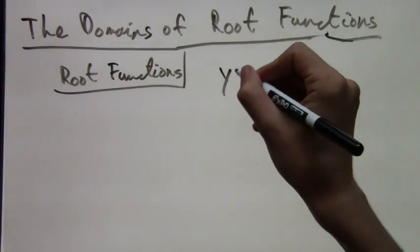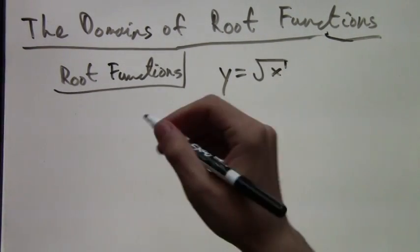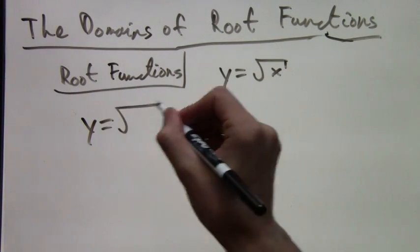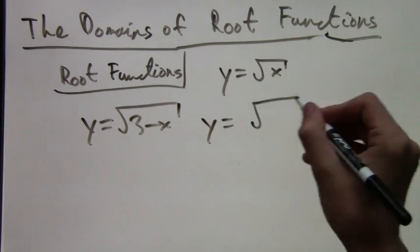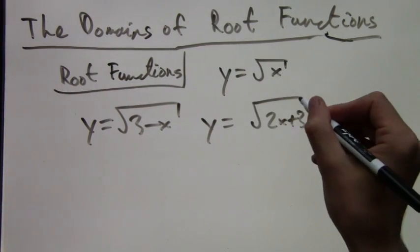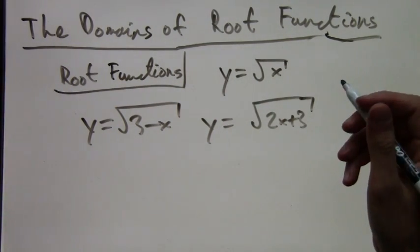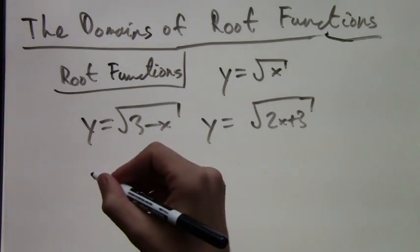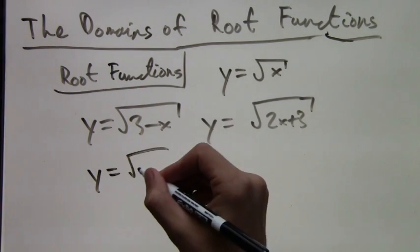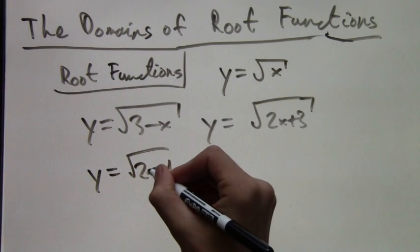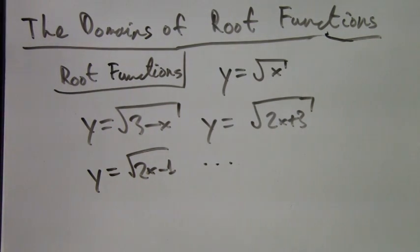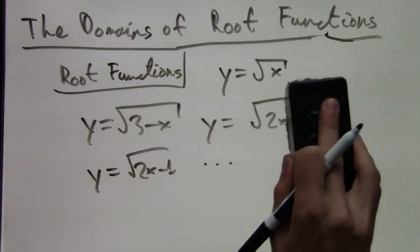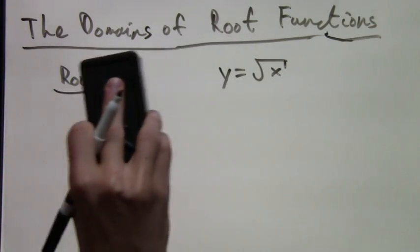Let's take a closer look. We can have root functions like y equals root 3 minus x, y equals root 2x plus 3, or y equals root 2x minus 1. I think you get the point—just things inside of the square root.